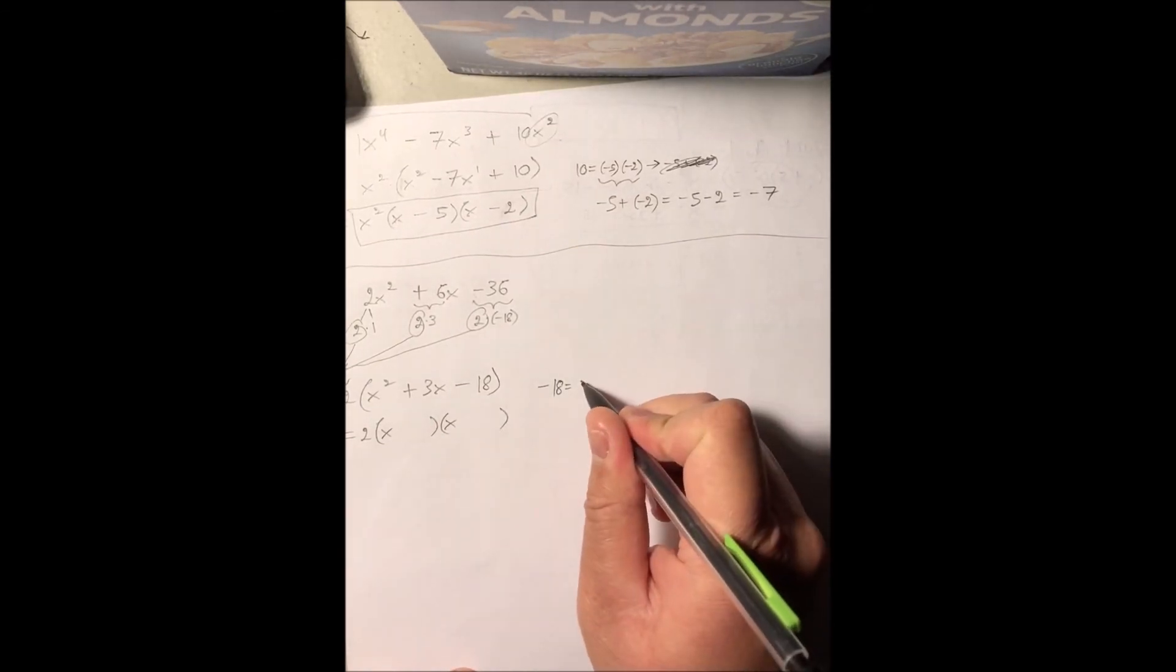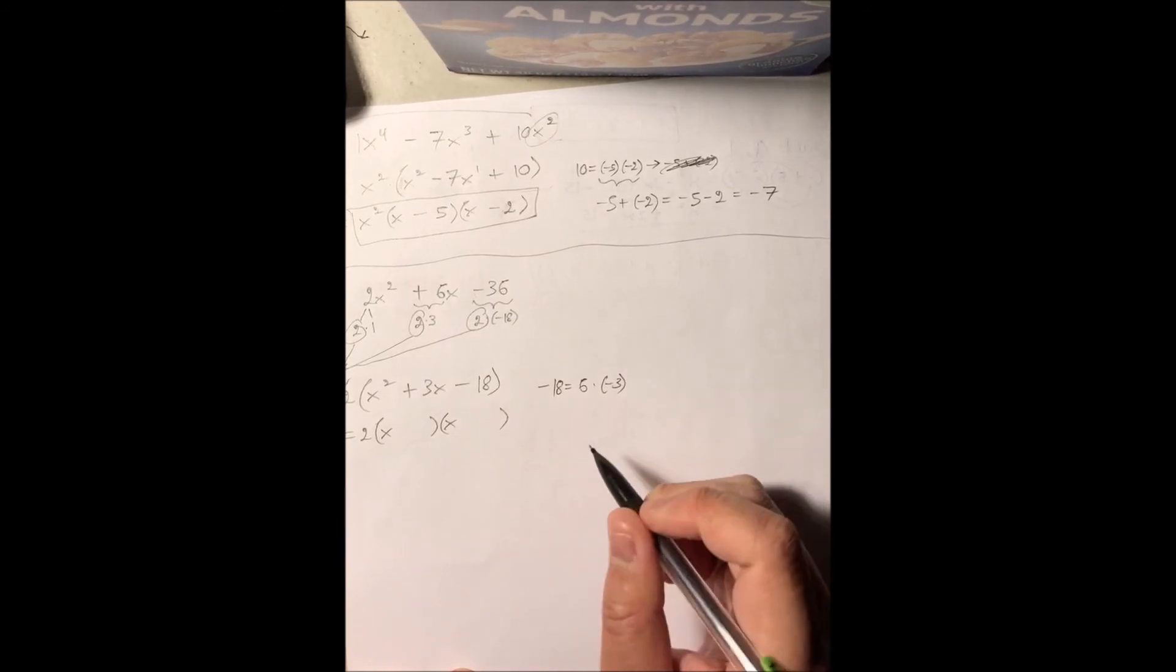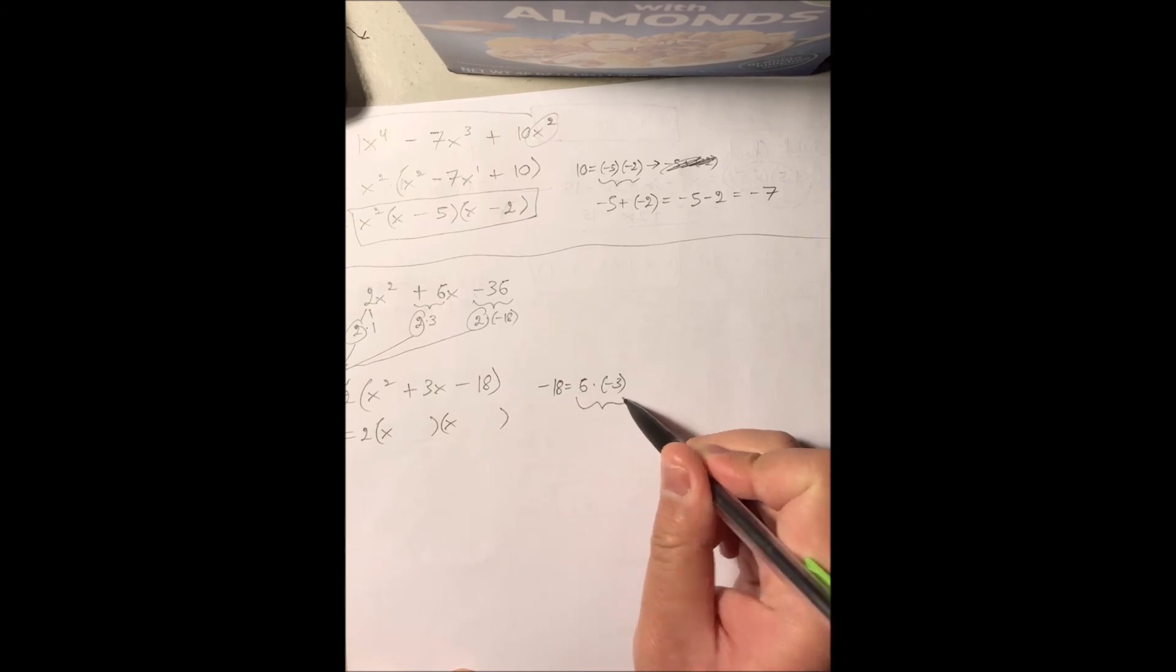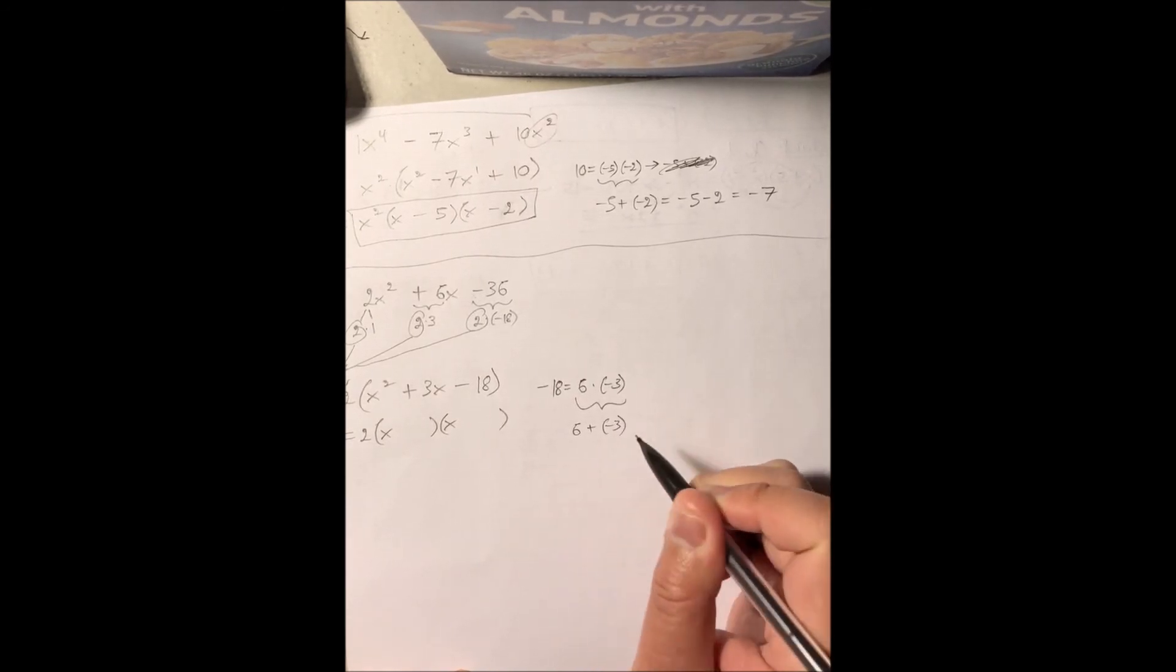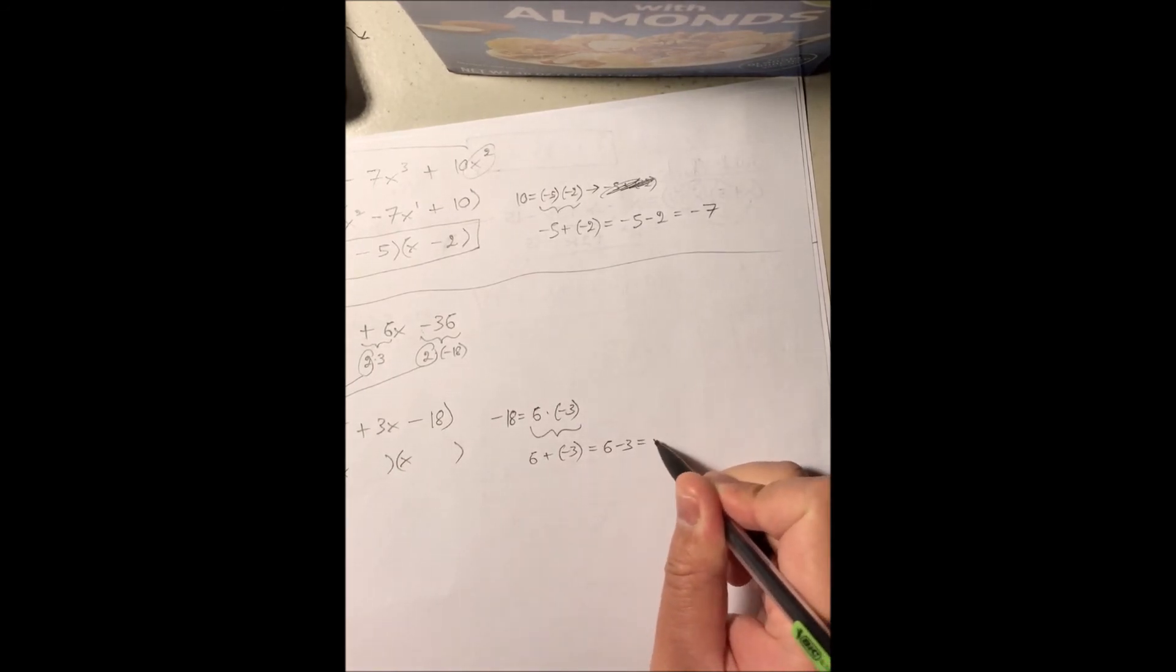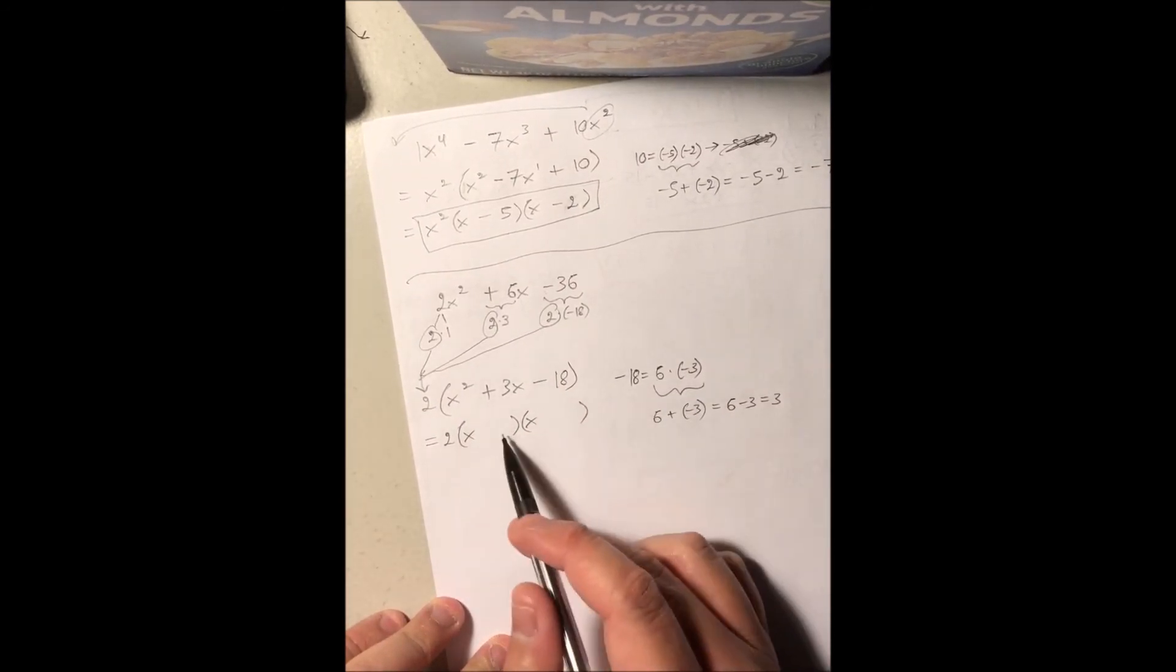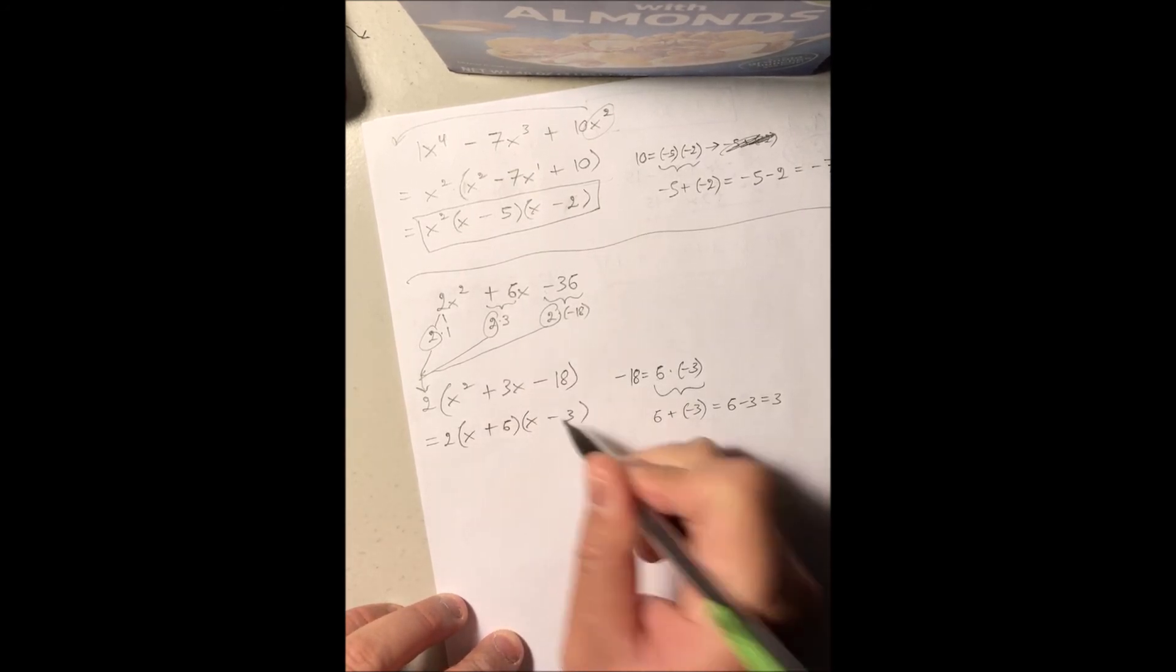The answer is positive 6 and negative 3. Positive 6 times negative 3 is negative 18. If we add them together, positive 6 plus negative 3, which is 6 minus 3, equals positive 3, just as we're looking for. So 6 and negative 3 go into these two empty spots: plus 6 minus 3.